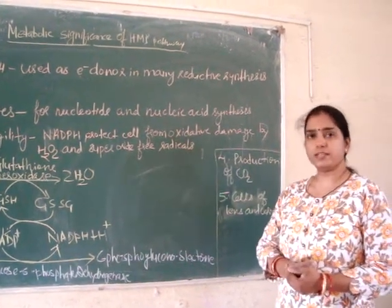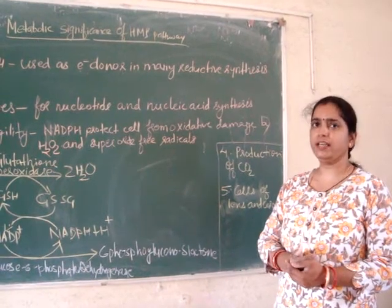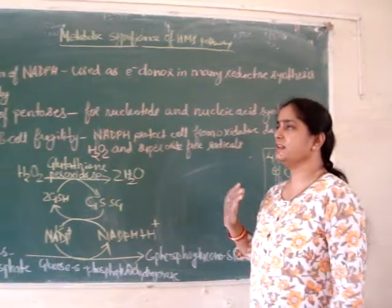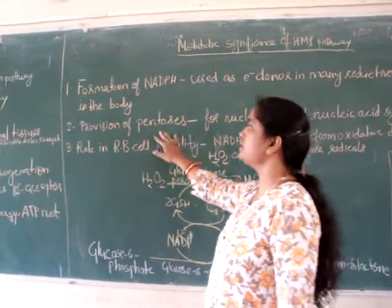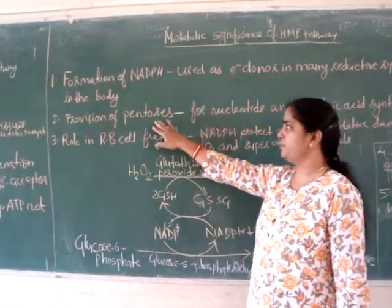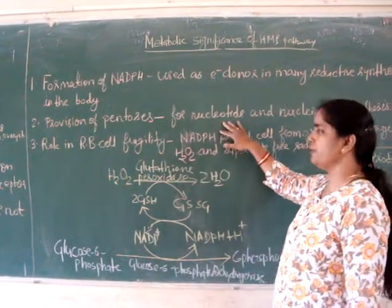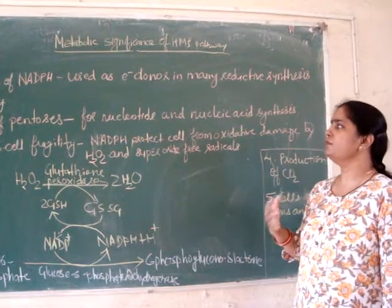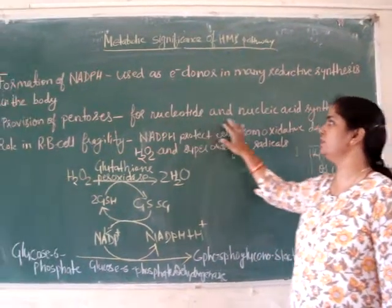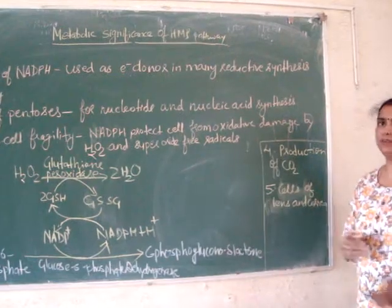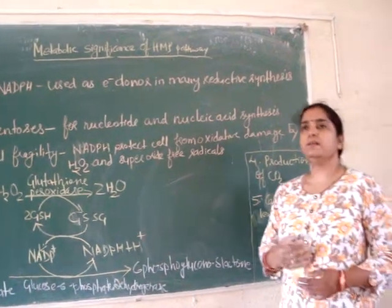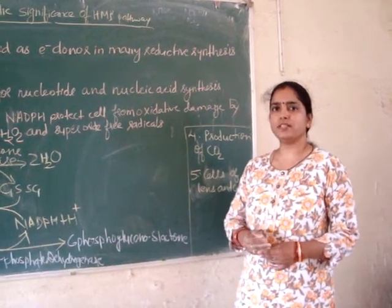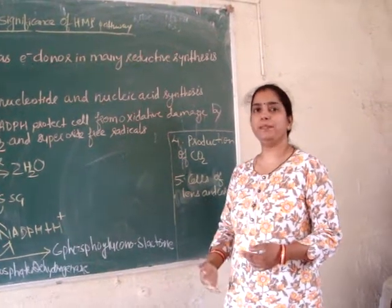NADPH is used as an electron donor, and this NADPH always comes from the PP pathway. The second end product of this pathway is pentose sugars — ribose sugars are produced through this pathway. These pentose sugars are very important components of nucleotides and nucleic acids, and are required for the biosynthesis of nucleotides and nucleic acids.